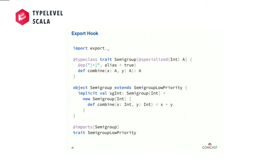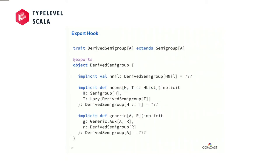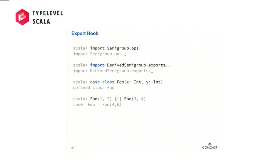In a separate jar file, where it's okay to have a dependency on Shapeless or some other derivation-based mechanism, we're going to define these inductive rules in an object. In this object we're going to annotate it with @exports. Then when we go to use this thing, we import our infix notation and then import all of those derived exports. This seems like it's going to have the same problem — we're bringing all of that stuff into lexical scope — but through the magic of Export Hook we're able to do the right thing and still have the appropriate implicit priorities. The derived stuff will only kick in if the right instances aren't found in normal implicit scope.